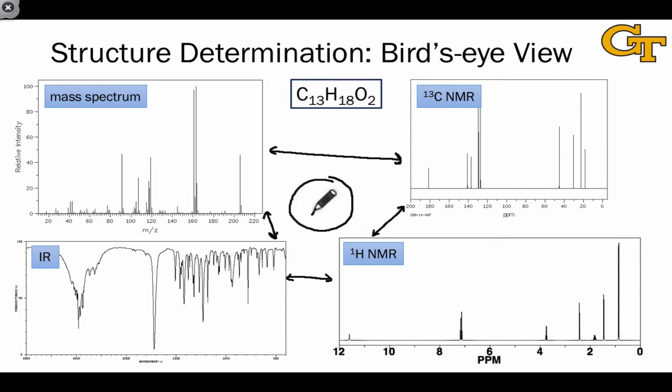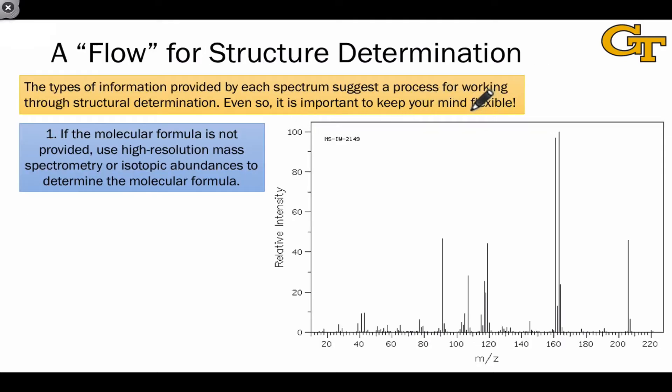This is going to require taking really good notes as you solve spectra and looking for resonances across different spectra, situations where two different spectral methods are telling you the same thing. While it is extremely important to stay flexible as you determine structure, there is a flow for structure determination suggested by the type of information available from each method. Generally, the first place you want to start is with the mass spectrum.